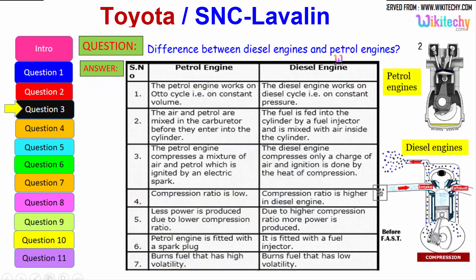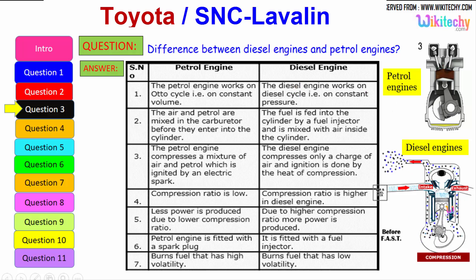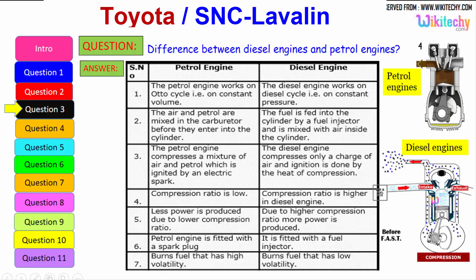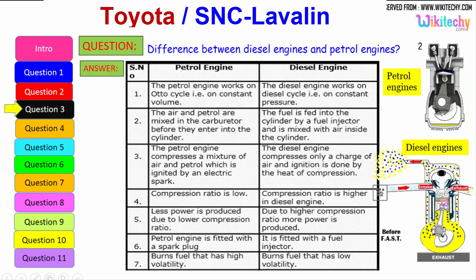Let us see the difference between the diesel engine and the petrol engine. The petrol engine works on the Otto cycle, therefore on constant volume, whereas the diesel engine works on the diesel cycle, on constant pressure. Air and petrol are mixed in the carburetor before they enter the cylinder, while in the diesel engine, fuel is fed into the cylinder by a fuel injector and is mixed with air inside the cylinder. The petrol engine compresses a mixture of air and petrol which is ignited by an electrical spark, whereas the diesel engine compresses only a charge of air and ignition is done by the heat of compression.